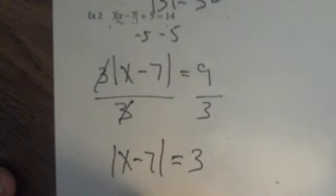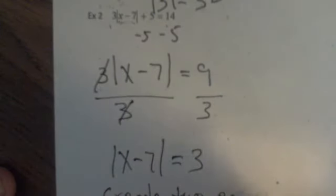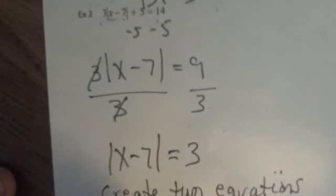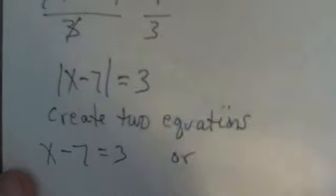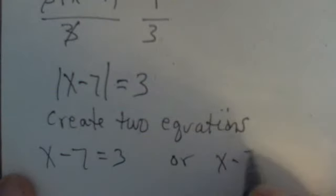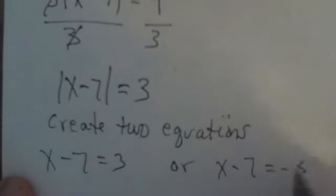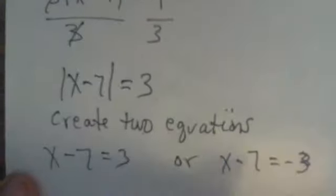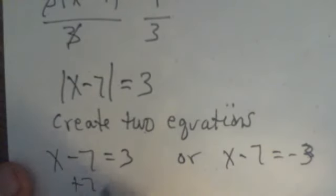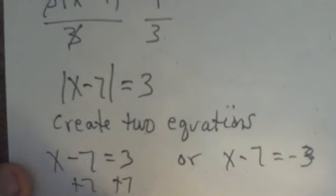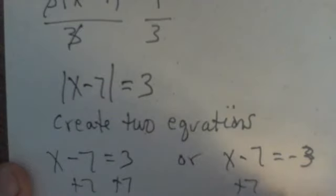So now I create two equations. So x minus 7 is 3 or x minus 7 is negative 3. Then I solve add 7 x is 10 add 7 x is 4. So those are my two solutions.